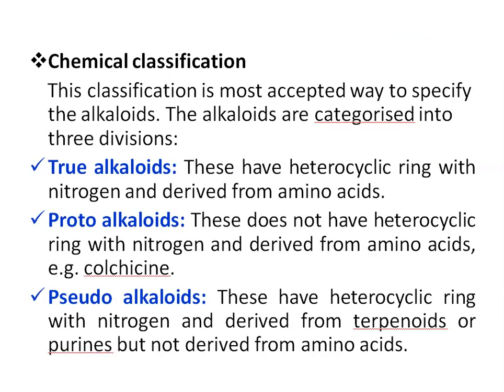Then chemical classification, which is the most accepted way to classify alkaloids. Alkaloids are categorized into three divisions: first, true alkaloids, which have a heterocyclic ring with nitrogen and are derived from amino acids; second, protoalkaloids, which do not have a heterocyclic ring with nitrogen but are derived from amino acids; and third, pseudoalkaloids, which have a heterocyclic ring with nitrogen but are derived from terpenoids or purines, not from amino acids.